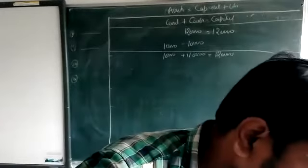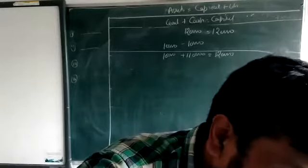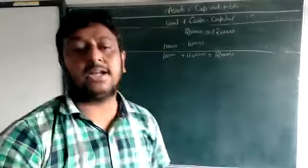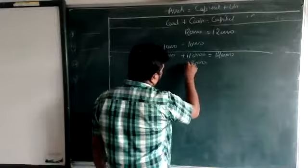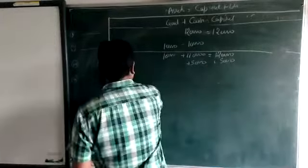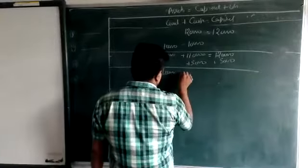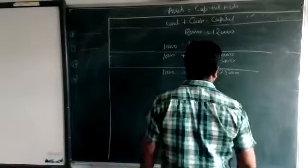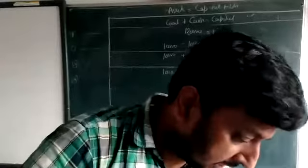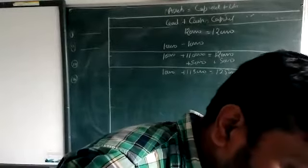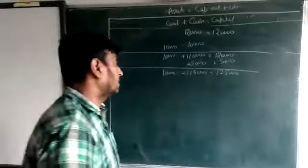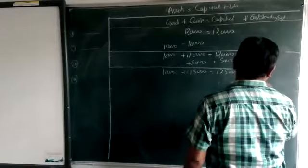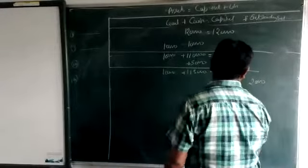Next, rent received — that will be added in cash and in capital. Then salary outstanding two thousand: we make one new head 'outstanding salary' for two thousand on the liability side and reduce it from capital.